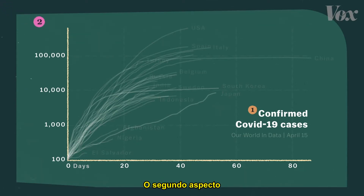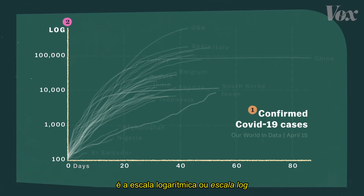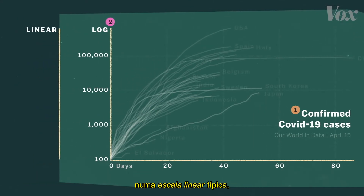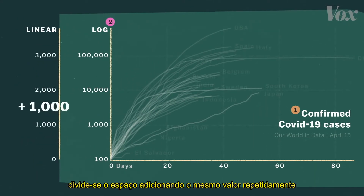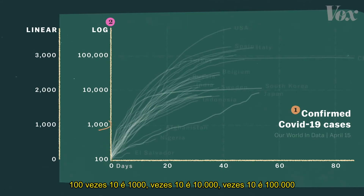The second thing to know is that the scale for the y-axis on this chart is a bit different from most charts. It's called a logarithmic, or log, scale. On a typical linear scale, you divide the space by adding the same value over and over. The log scale is made by multiplying a value — in this case, 10. 100 times 10 is 1,000, times 10 is 10,000, times 10 is 100,000.